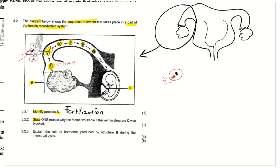The second question says 'state.' Whenever they say state and identify, these are very similar. We have to state a reason why the fetus would die if the vein in structure C was blocked. Structure C is a tube-like structure here, and you can note that this structure is actually attaching the little fetus to the mother. That structure which attaches the fetus to the mother is called the umbilical cord.